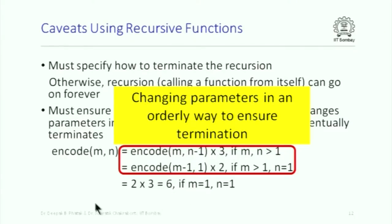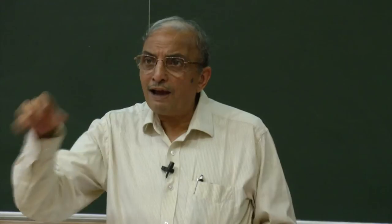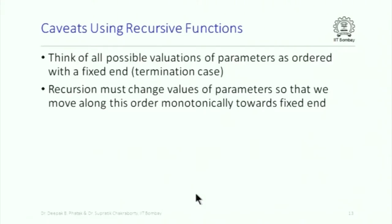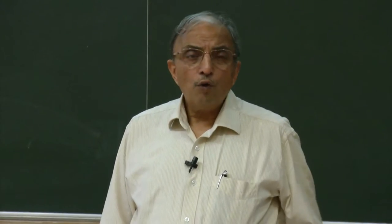When you start with encode(m, n), you actually invoke encode(m, n minus 1) until n reduces to 1. Then it calls encode(m minus 1, 1) into 2 for successive values. So each step ensures the parameters are moving towards the termination case where m and n are both 1. Think of all possible valuations of parameters as ordered with a fixed end — recursion must change values of parameters so that we move along this order monotonically towards the fixed end. Of course, this monotonic movement could take one of several alternative paths.